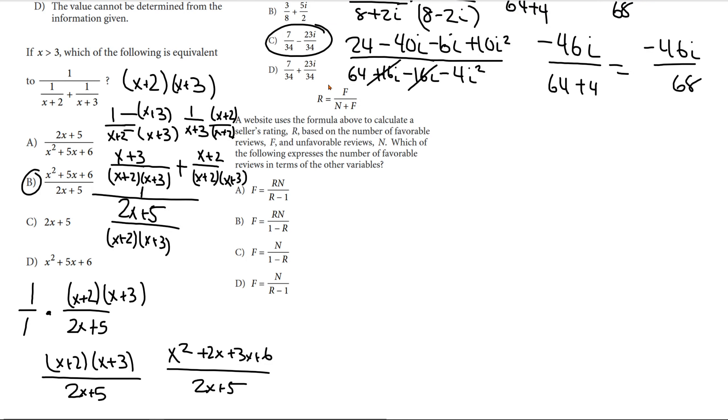Okay, next one is asking us about manipulating variables in the equation. So, what we're looking for is f. So, if we're given this, one of the first steps we need to do is get f out of the denominator. So, what we do is multiply n plus f by r. So, these two will cancel out. And we're left with r times n plus f is equal to f.